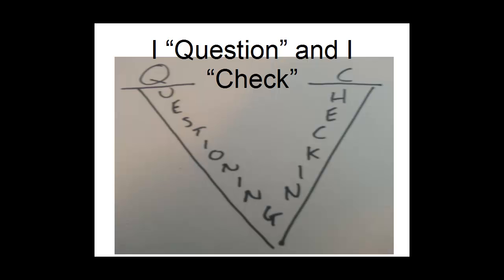So should I throw away the V model? No — because in the V model, this left-hand line represents questioning and the right-hand side represents checking.